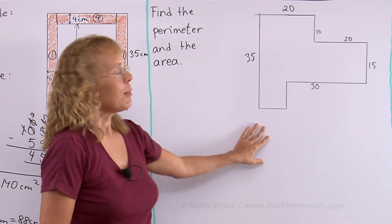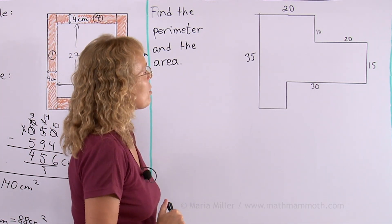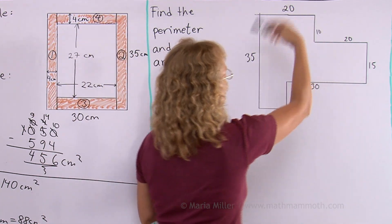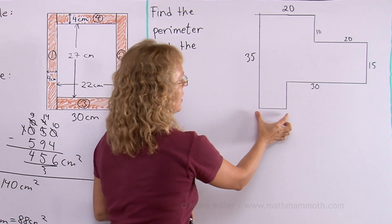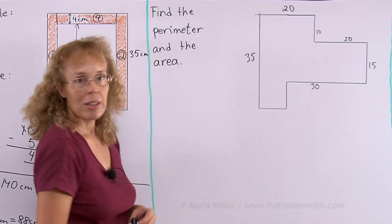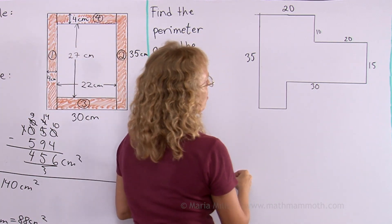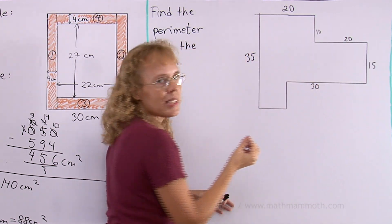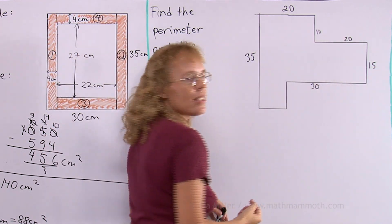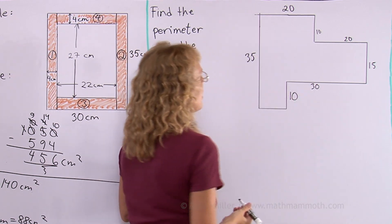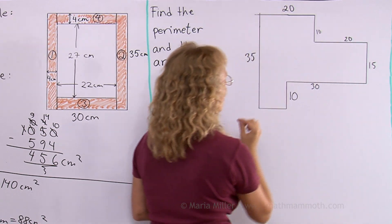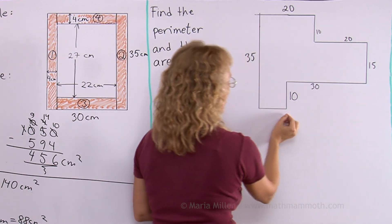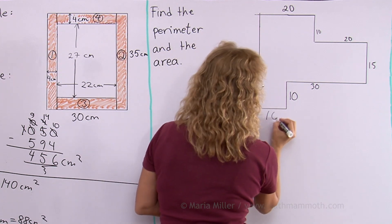Over here we have this odd shape and we need to find its perimeter and area. Let's work on the perimeter first. It has a lot of side lengths already given, and to find the perimeter you just add all these side lengths together. But this side and this side we don't know — we can figure them out though. In total this side here is 35, so the vertical sides must add up to 35 centimeters. There's 10 and 15, that's 25, so the unknown side must be 10 units. The same principle works horizontally: we have 20 and 20, so coming back we also have 30 and something that makes 40, meaning this must be 10.